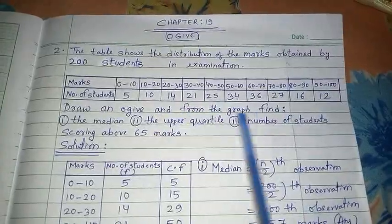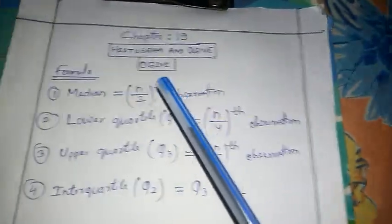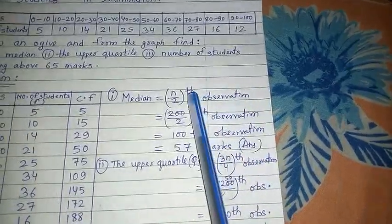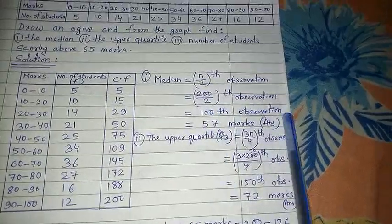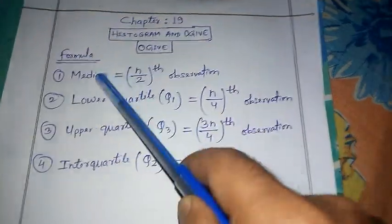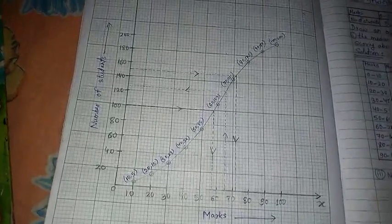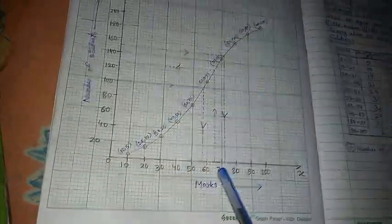Now, after drawing the ogive, from the graph find the median. Number one, median formula. Median is n by 2 th observation. Here n is 200, that means 200 by 2 is 100, the 100th observation. While using all these quartile formulas and median formulas, start from the y-axis and then drop on the x-axis. While finding any number of students question, start from the x-axis and go to the y-axis.